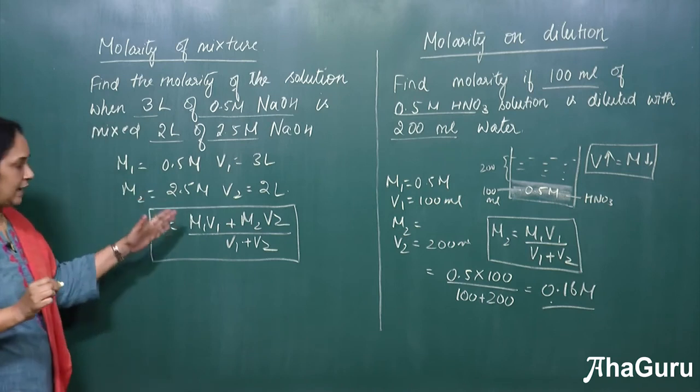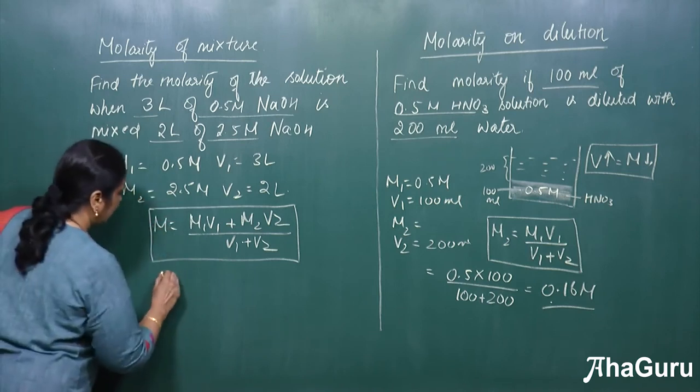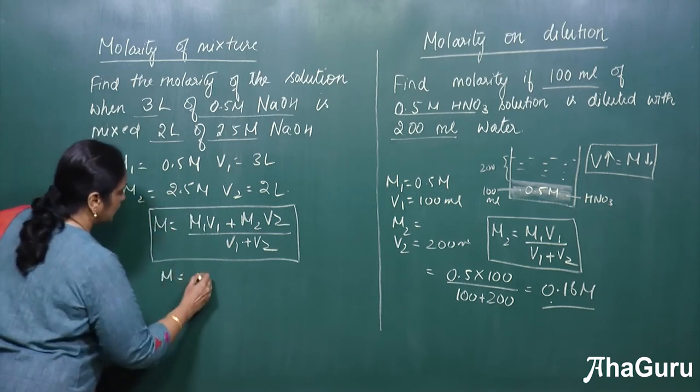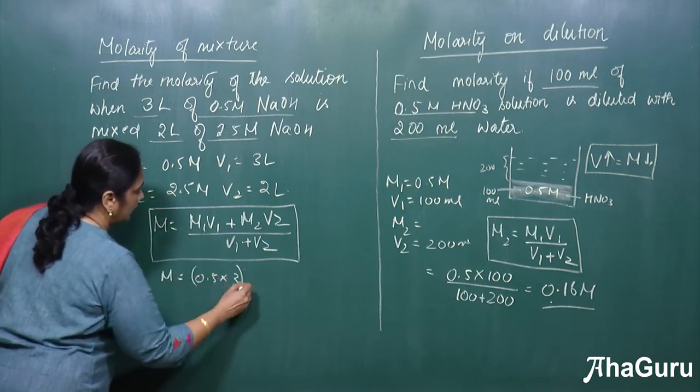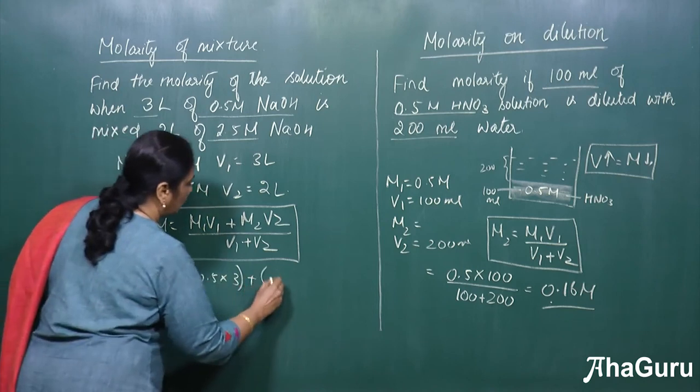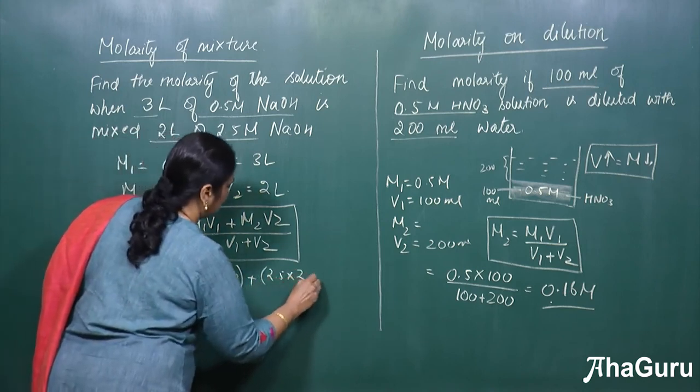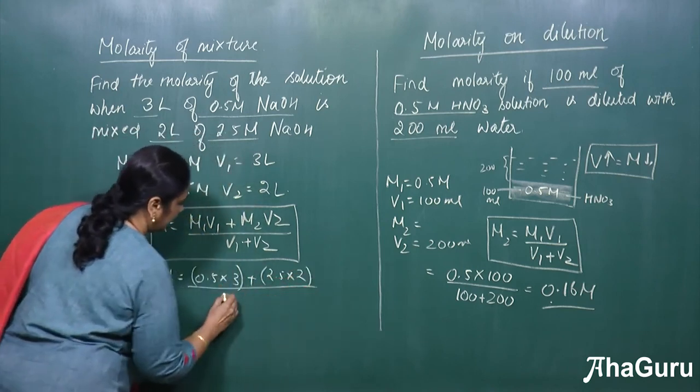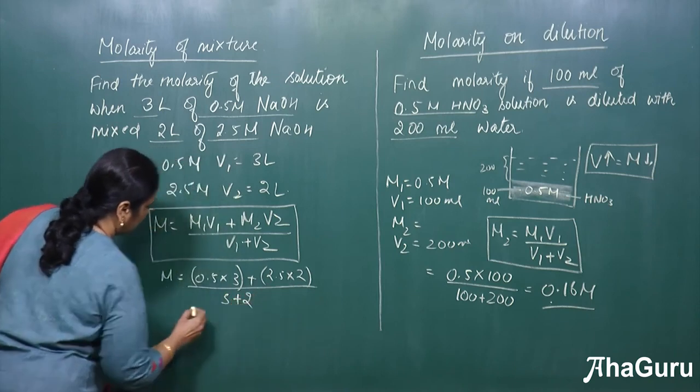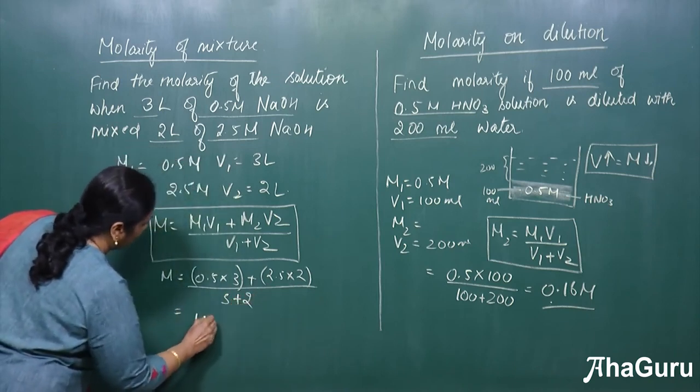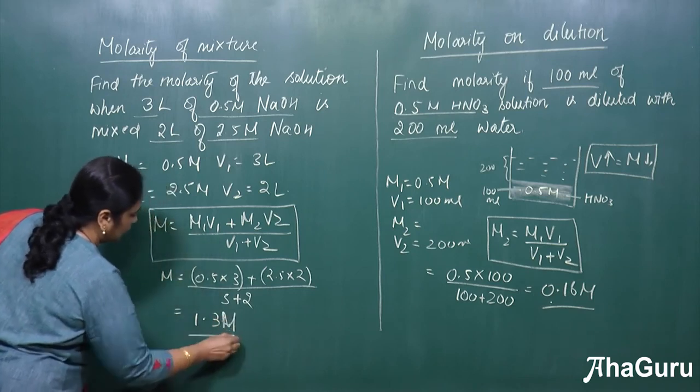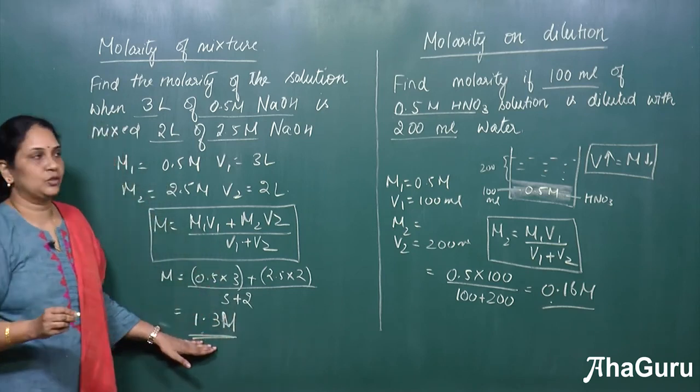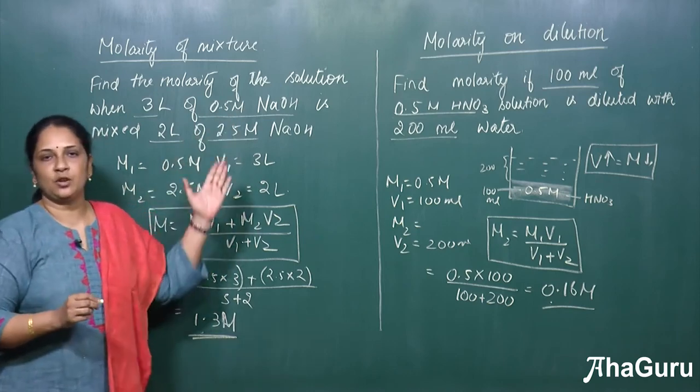So substituting the values in this formula, we will get M will be equal to 0.5 into 3 plus 2.5 into 2 divided by 3 plus 2. So here the value will be 1.3 M. So this will be the molarity of the solution when we mix two different concentrations.